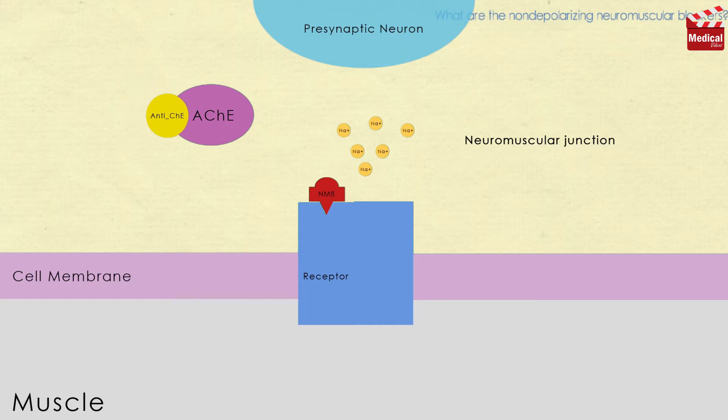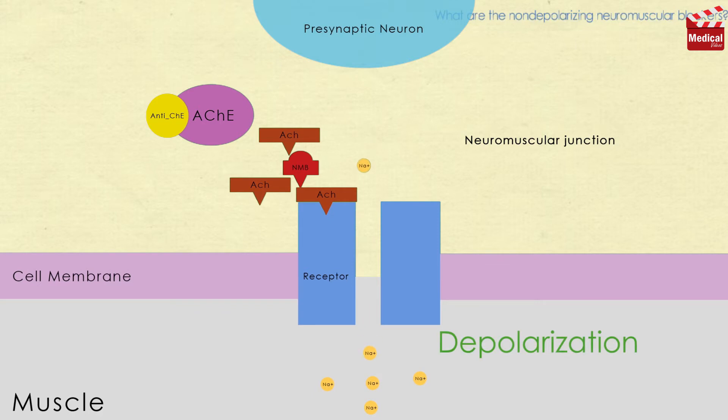Their competitive action can be overcome by administration of cholinesterase inhibitors such as neostigmine and edrophonium, which increase the concentration of acetylcholine in the neuromuscular junction. Anesthesiologists employ this strategy to shorten the duration of neuromuscular blockade. At low doses, the muscle will respond to direct electrical stimulation, allowing for monitoring of the extent of neuromuscular blockade.